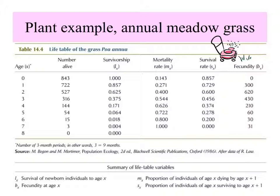Survivorship at the first interval is 1 — everybody's alive. But by the second time, there are only 722, so 85% survive. The mortality rate is 27%, and the survival rate can be figured as how many died from one interval to the next. Fecundity is the number of seeds produced by the plants, which peaks in the middle and then falls off. The name of these plants suggests their life is of limited length — annual meadow grass usually lives about a year or a little more.